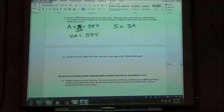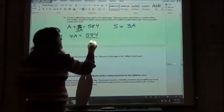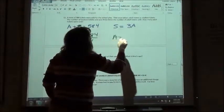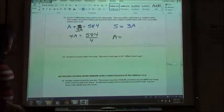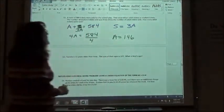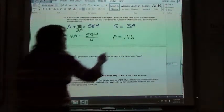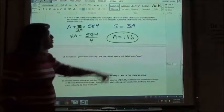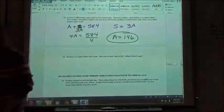And to solve that, I'm going to divide by 4. I'm going to let you divide that for me. 146. 146 adult tickets. And the question does say how many adult tickets were sold, so that is the answer I want. Had they asked me for the student tickets, I would have had to multiply that by 3.